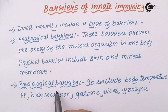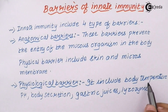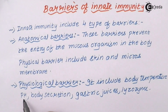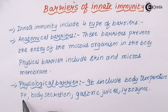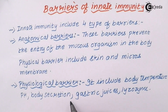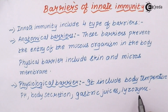The next barrier is the physiological barrier. This includes your body temperature, which is approximately 37 degrees Celsius in every individual, and the pH of your body. The pH of your stomach region is acidic due to the presence of HCl, which has a pH of approximately 3.5 and does not allow the growth of microorganisms. Your body secretions — including certain salts eliminated during sweating, gastric juices, and lysozymes — which can be termed as phagocytic enzymes, or the suicide bags of the body.